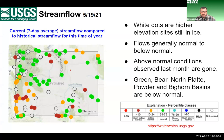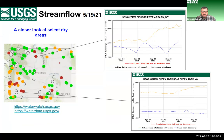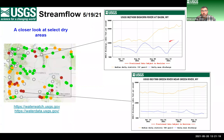Singling out first the Bighorn Basin — Bighorn River at Basin. The blue line shows current daily average flows for about the last month, and the tan line above it is the long-term average. We're getting a little snowmelt starting to increase flows over the last week, but we're still well below average — less than about half of what the normal flow would be at this time of year over the last 37 years.